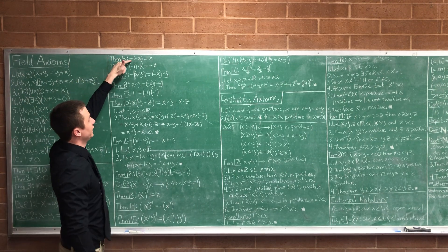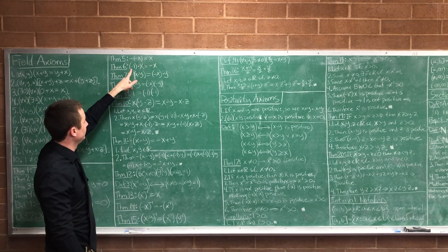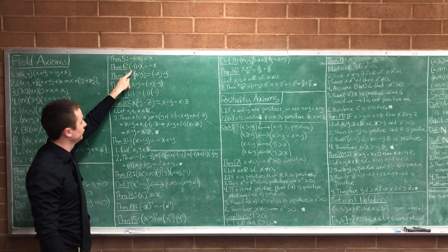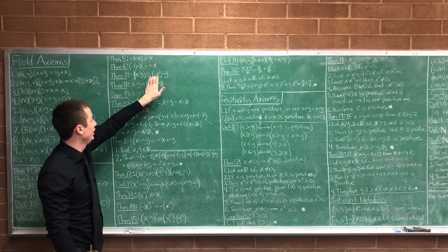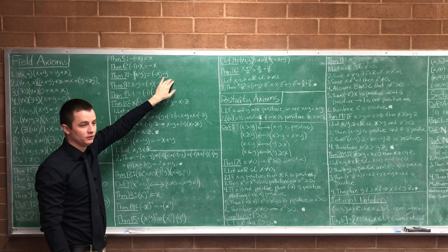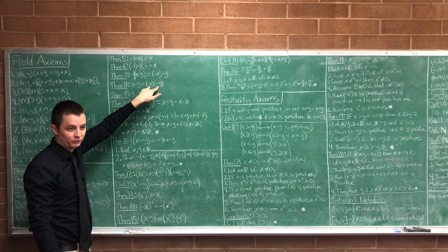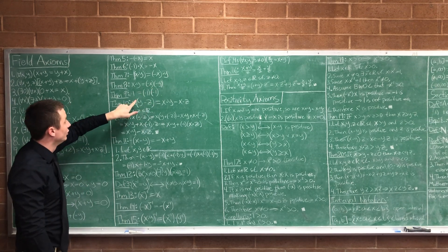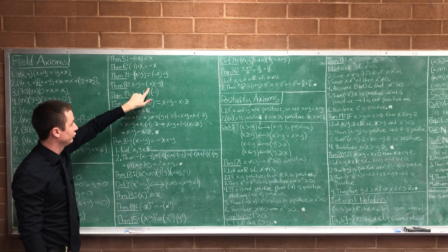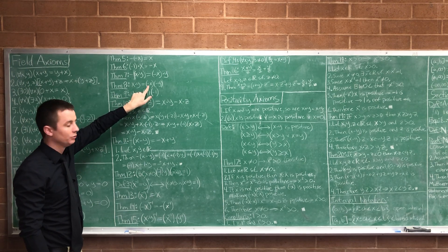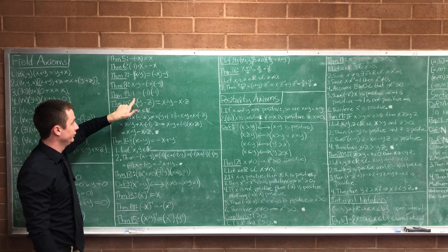Moving on: we proved that negative negative x is just x. We proved that negative x is the same thing as negative one times x. We proved that negative x times y is negative x times y. We proved that x times y is negative x times negative y. And we proved that negative one times negative one is one — this was just a corollary: when you plug in one for x and y, that turns into one times one, which is just one.